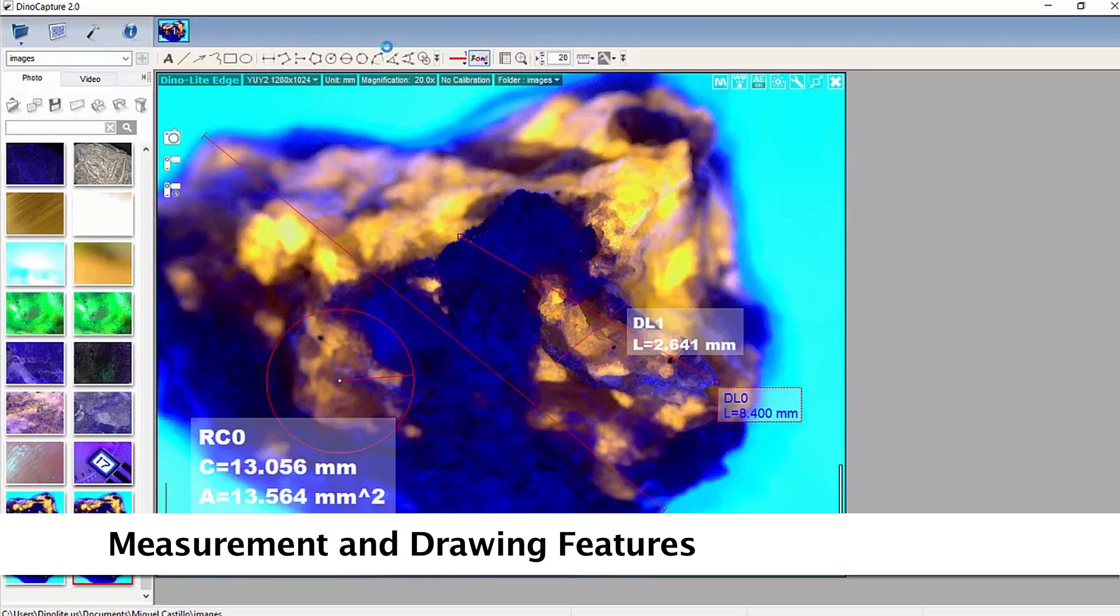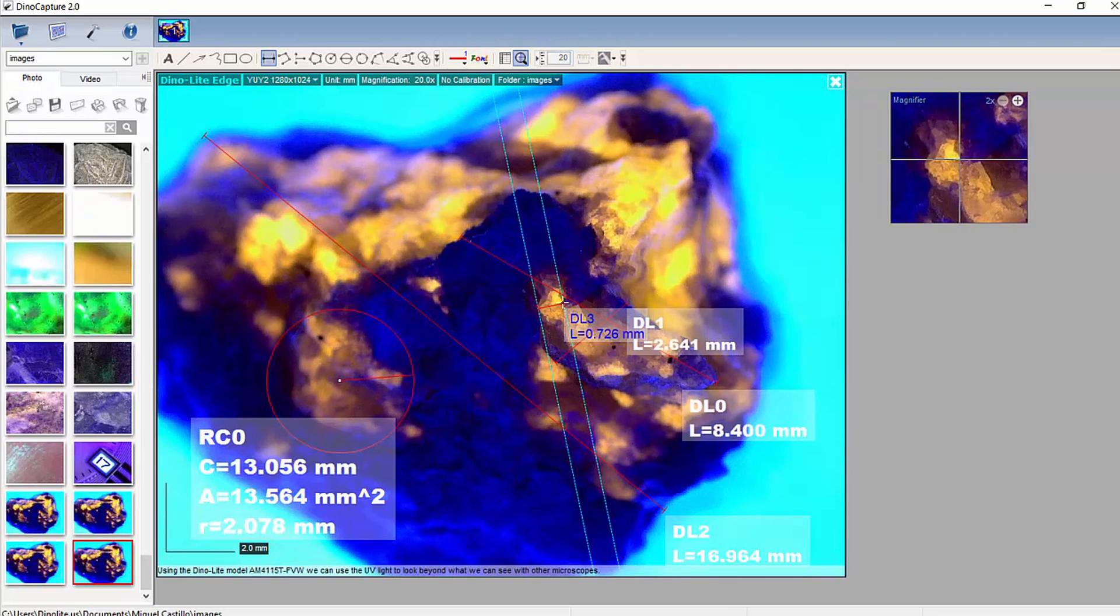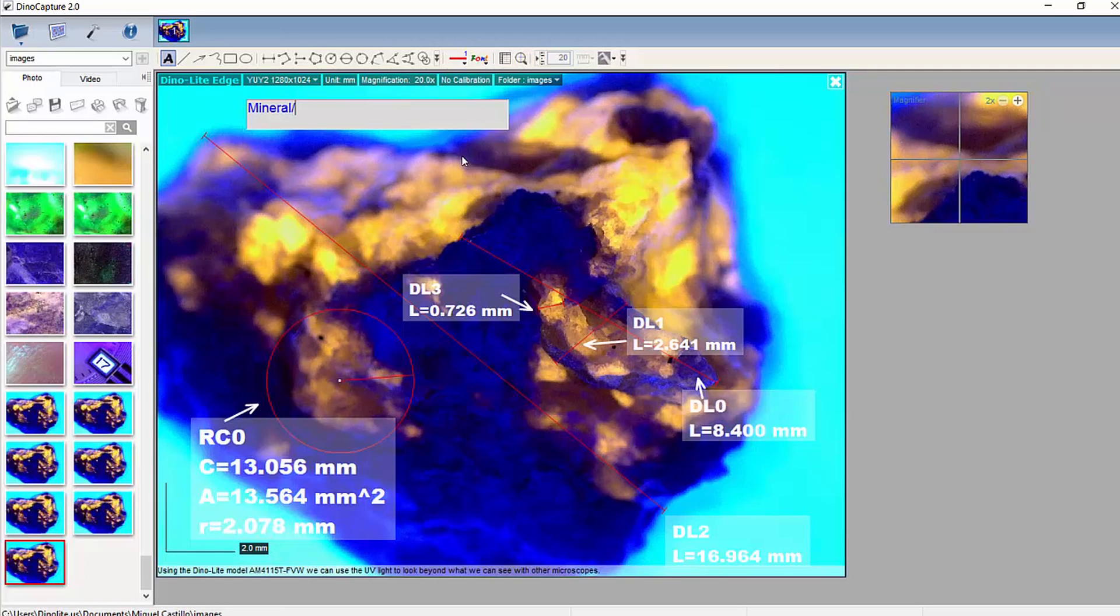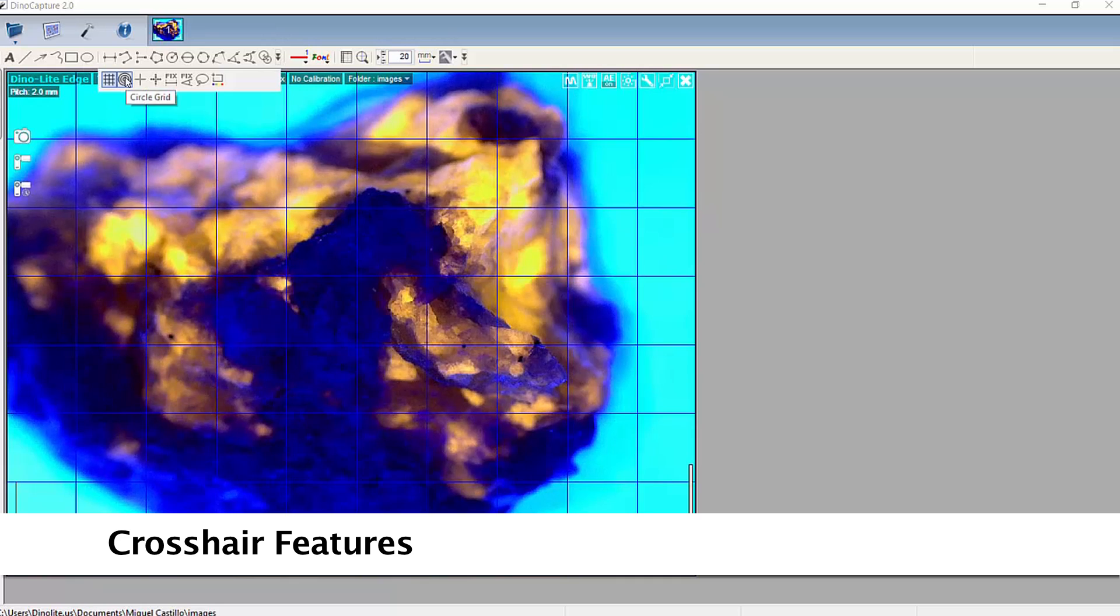The included Dynolite capture software includes drawing and text features, measurement, as well as searchable annotations. Measurement tools also include options for grid lines and crosshairs.